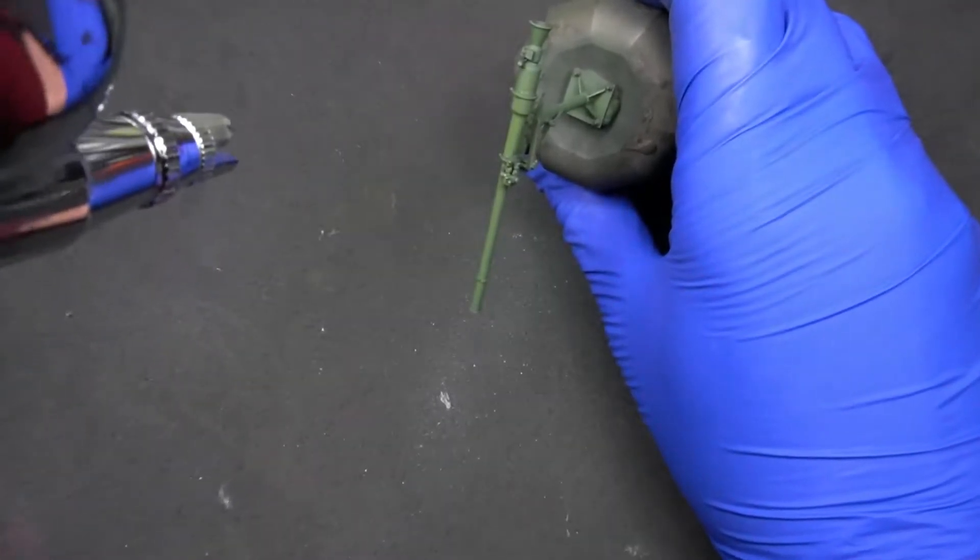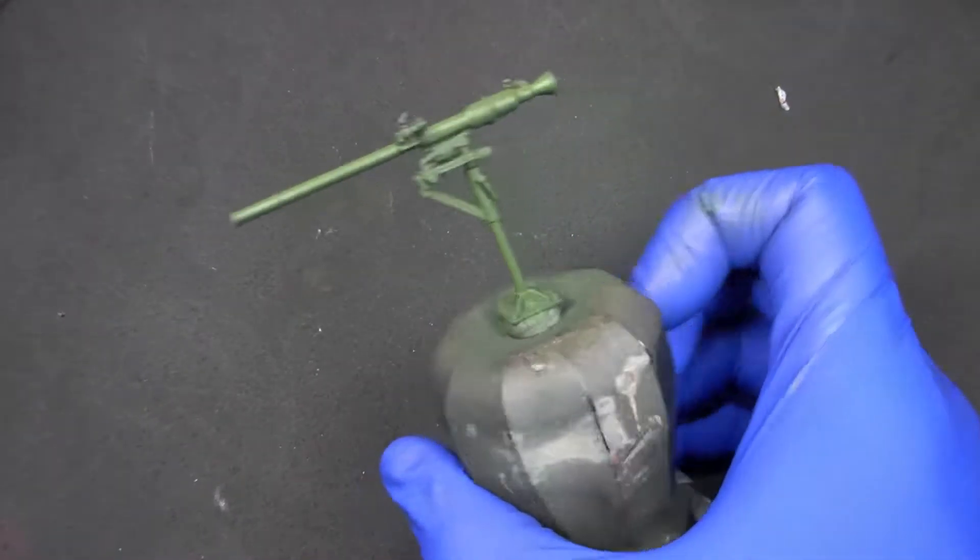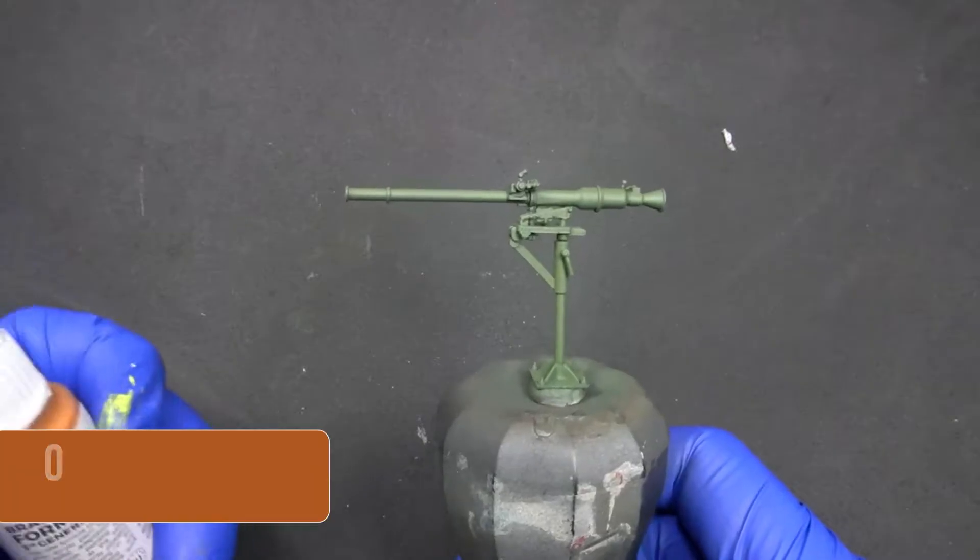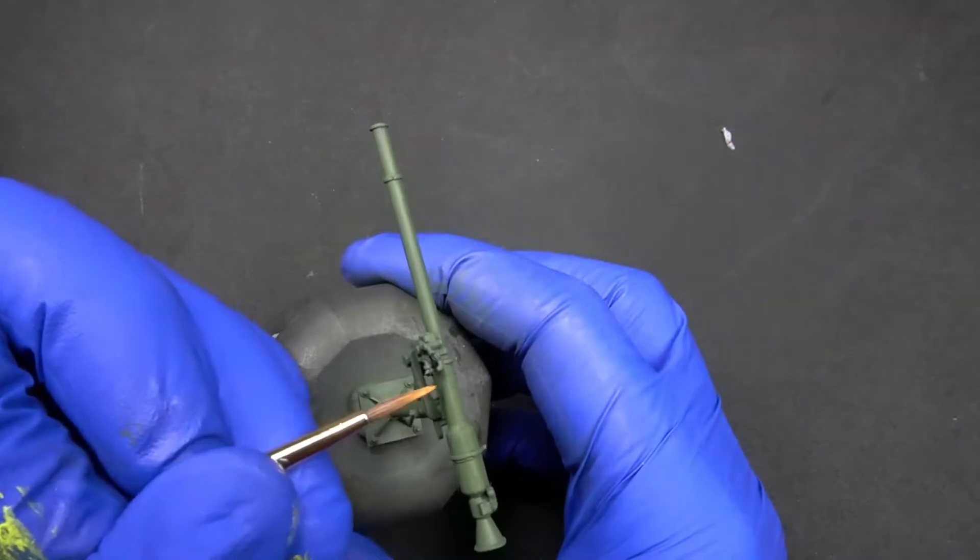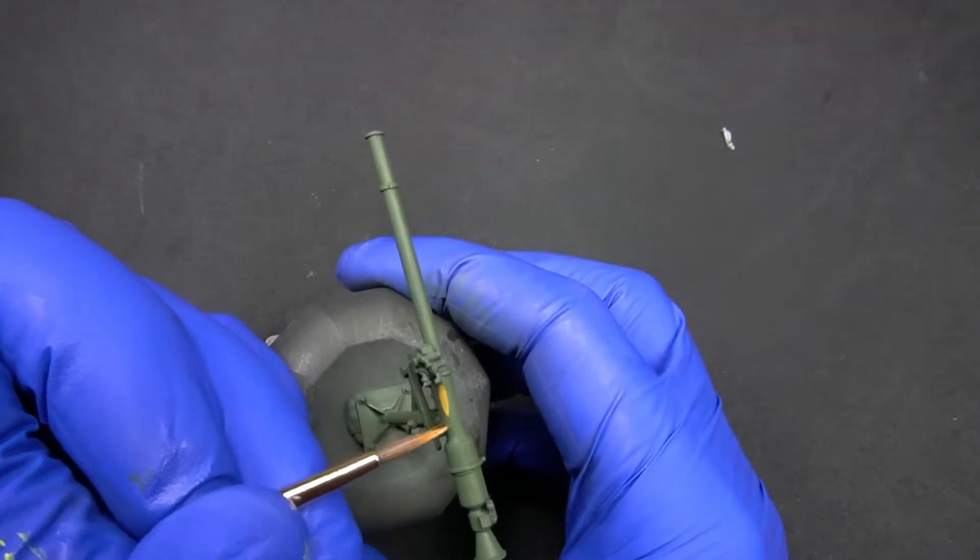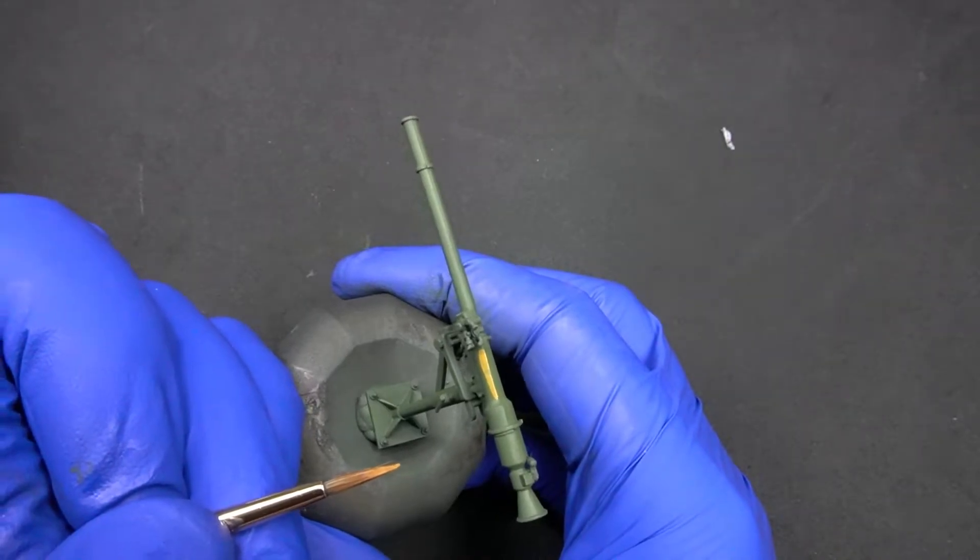We apply it from above over the mount and the gun itself. If you look up reference images for this recoilless gun, you'll notice that there is a small part on the side with a different color. To replicate this, we've chosen orange brown, as it's the color that resembles it the most from the options we have available.